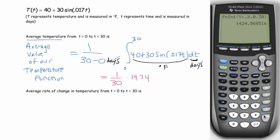So it's 1 over 30 times 1424.569. If you divide that by 30, you get 47.486 degrees Fahrenheit. So the average temperature on those 30 days was about 47.486 degrees.